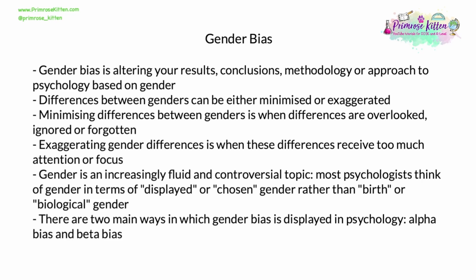In today's world, gender is an increasingly fluid and controversial topic. Most psychologists think of gender in terms of displayed or chosen gender rather than birth or biological gender. There are two main ways in which gender bias is displayed in psychology: alpha bias and beta bias.